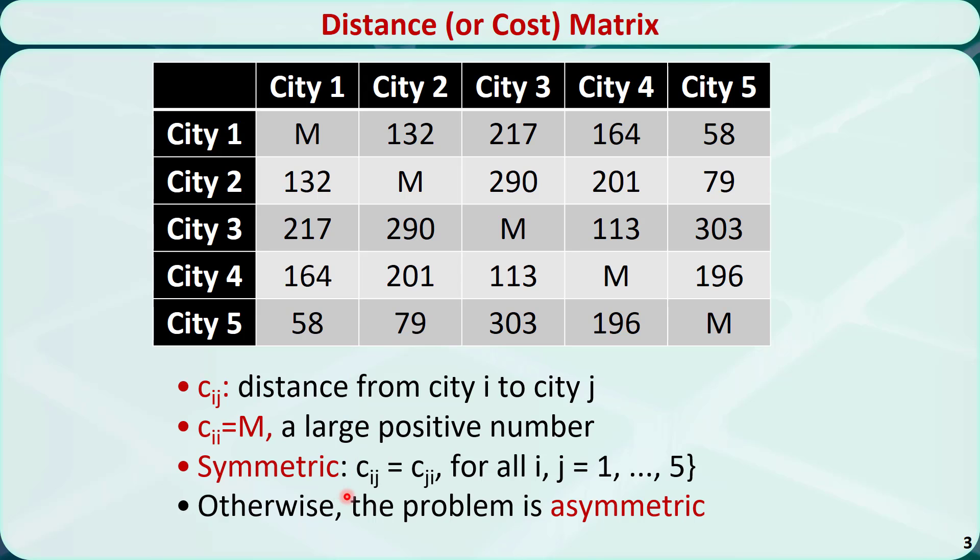A traveling salesman problem is symmetric if the distance or cost from i to j is equal to the distance or cost from j to i. Otherwise, the problem is asymmetric. This situation may happen if from city i to city j is just a one-way road, and the return trip has to take a different route.